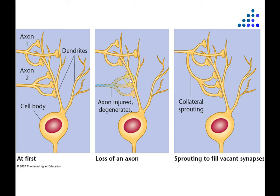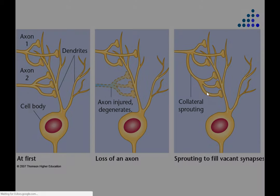But that situation tends not to stay that way very long. Instead the postsynaptic cell releases chemicals, mainly neurotrophins, that encourage the growth of collateral sprouts from nearby healthy axons. As we'll see, this is an important mechanism by which the brain — and the nervous system in general — reorganizes itself after injury.